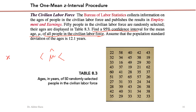The confidence interval is obtained by the point estimate minus z_α/2 times σ/√n. This procedure is implemented whenever we have a known population standard deviation. On the upper side, the formula is x̄ plus z_α/2 times σ/√n.